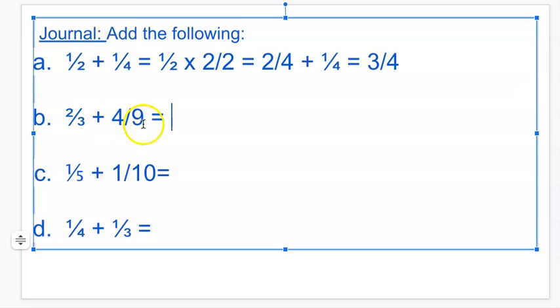Problem B, I have 2 thirds plus 4 ninths. So I look at 9 and 3. And there's a very easy relationship there. I know that 3 times 3 is 9. So I'm just going to change 2 thirds times 3 over 3. And remember, you can multiply any fraction by a fraction like 3 over 3 because that equals 1. It doesn't change the value of the fraction. It just finds an equivalent fraction. 2 times 3 would be 6. So that would be 6 over 9. And then I can add that to 4 over 9, which would be 10 over 9.